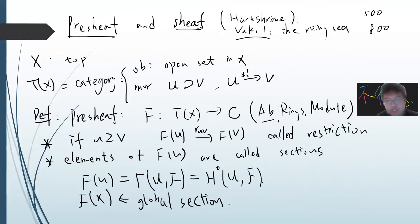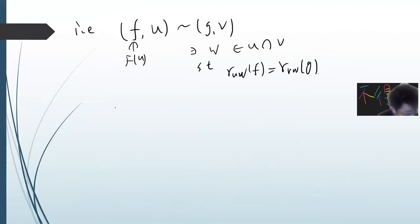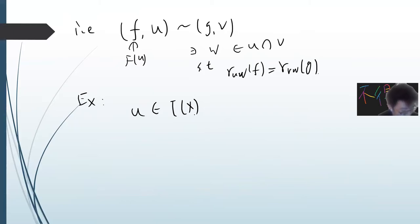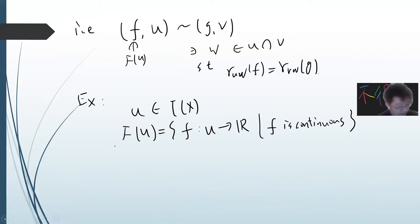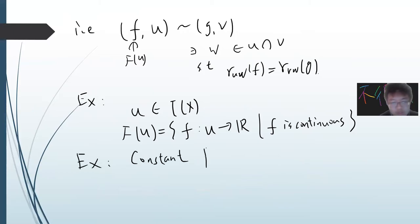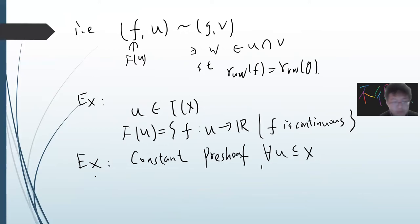The key idea in algebraic geometry is that everything is very abstract. An example: take the open sets of X and define a pre-sheaf F(U) to be all continuous functions from U to ℝ — this is a pre-sheaf. Also there is a constant pre-sheaf: for every U, the restriction map sends F(X) to F(U) as a constant, and it's isomorphic.